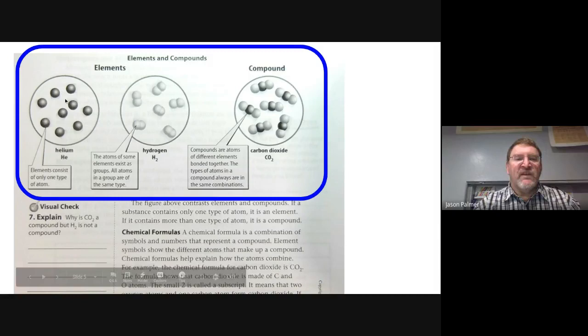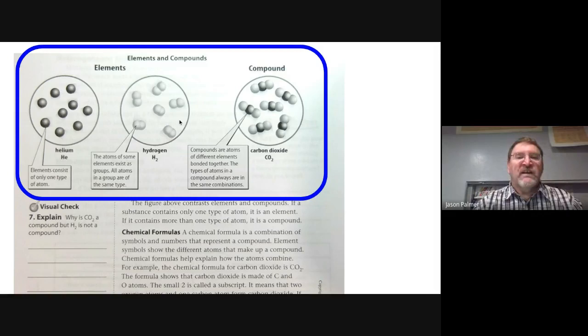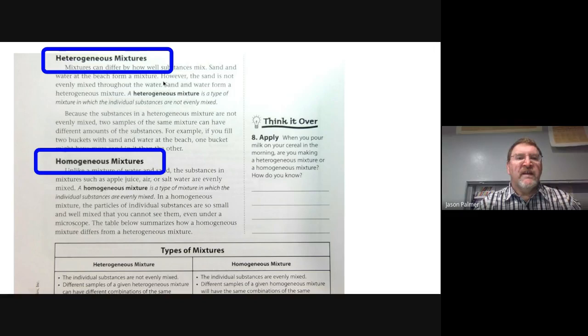All right. So helium will exist as single atoms. It's a noble gas. So they don't make, under normal circumstances, don't make compounds. Hydrogen, it bonds with itself. It's what we call a diatomic. And then you have compounds like carbon dioxide. And so CO2, one carbon, two oxygens. And so that's why we see three atoms bonded together.